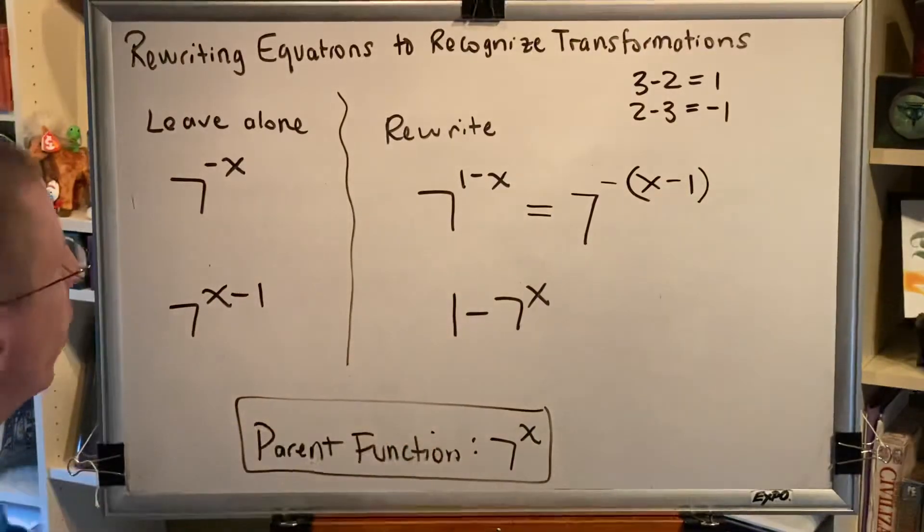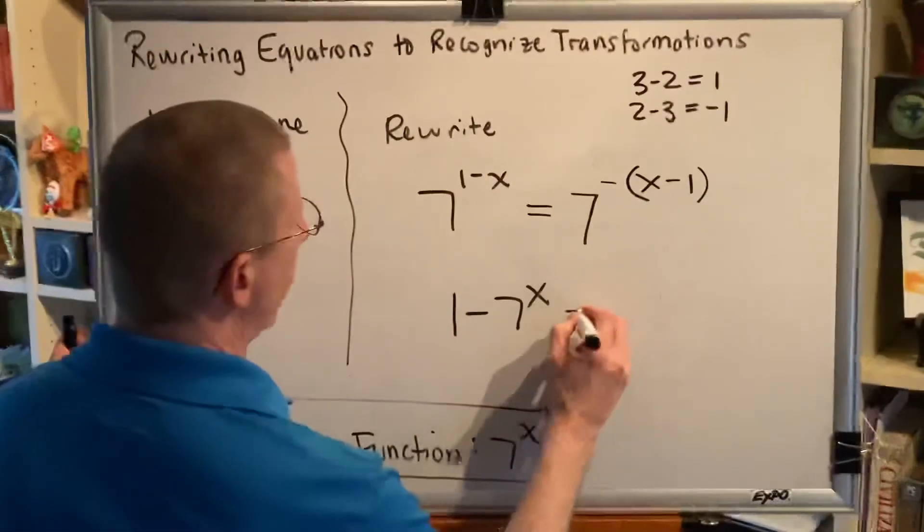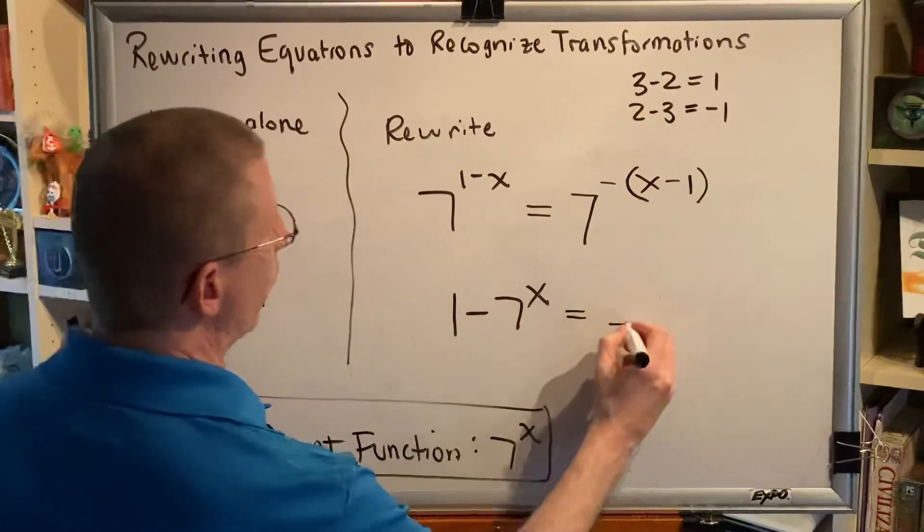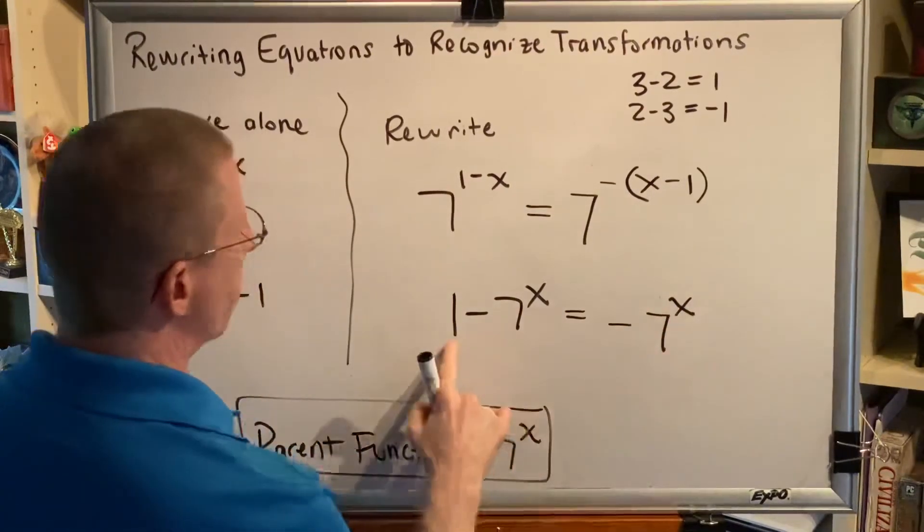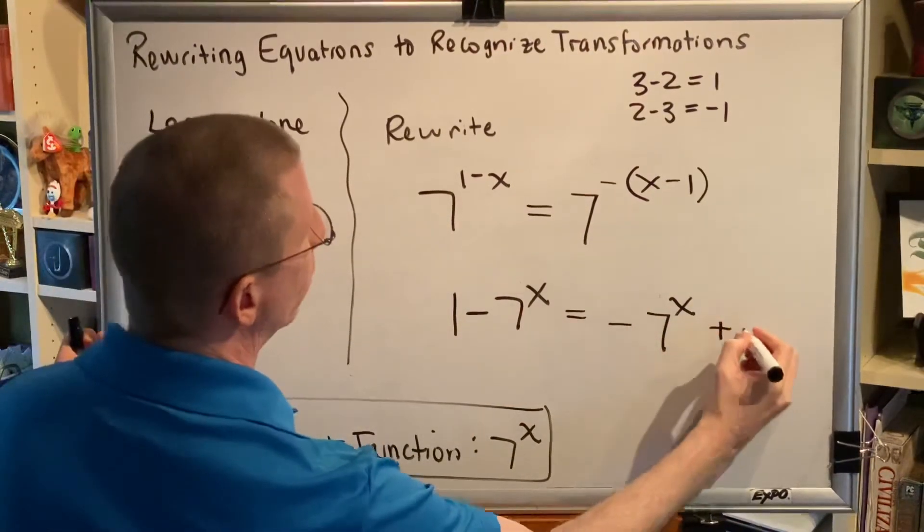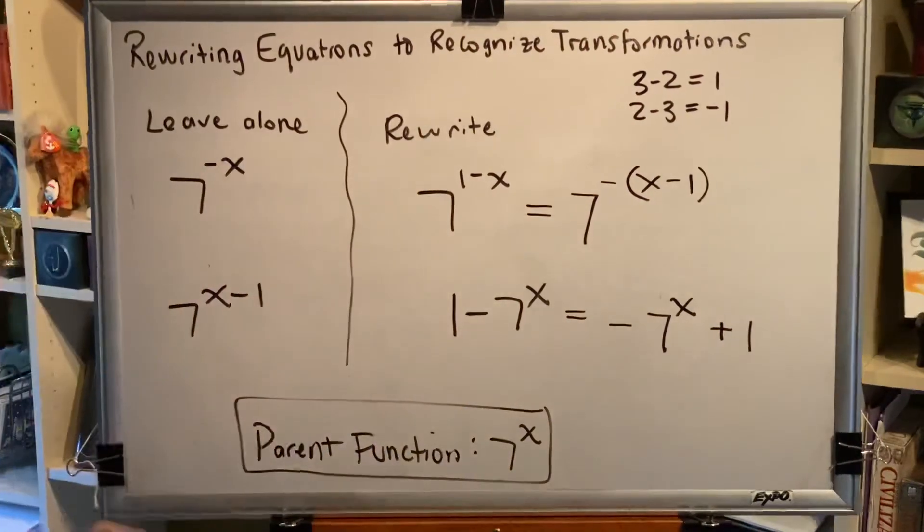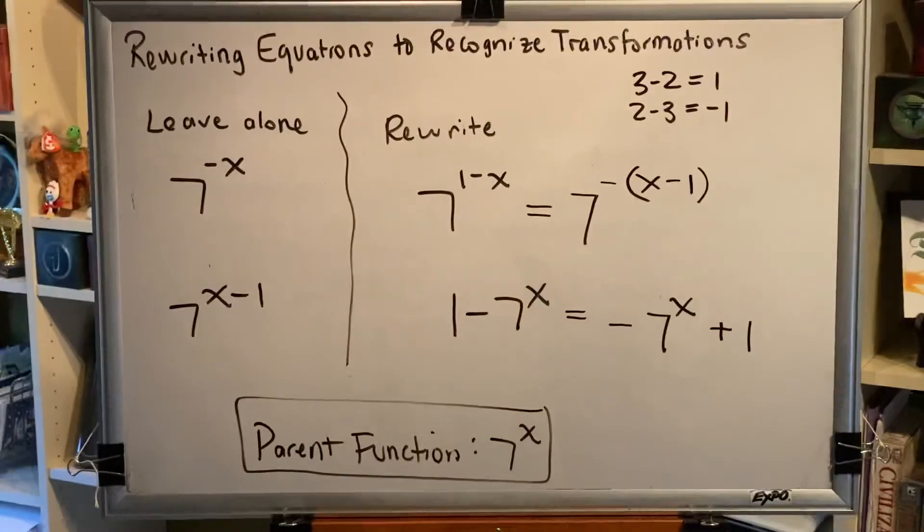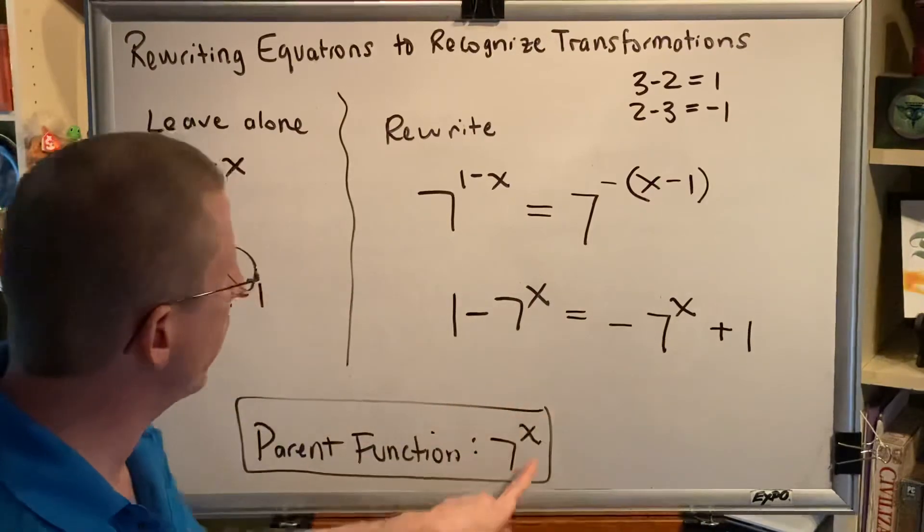Here's another one that we're going to rewrite. We're going to rewrite this as negative 7 to the x power plus 1. And in doing so, we're going to see that there are two transformations for this problem as well. We can see the 7 to the x in both places.